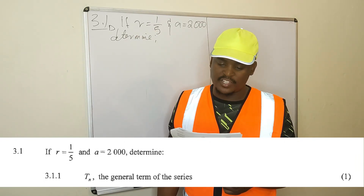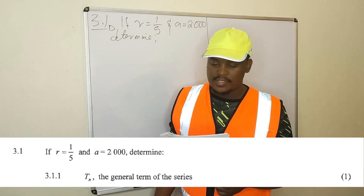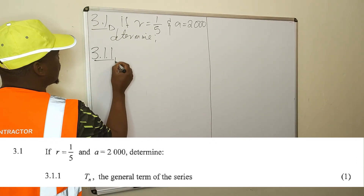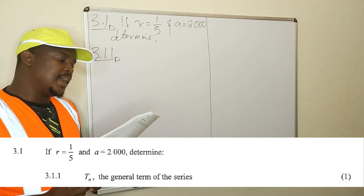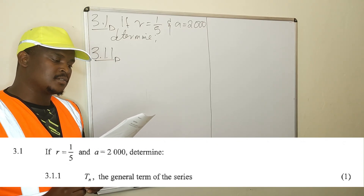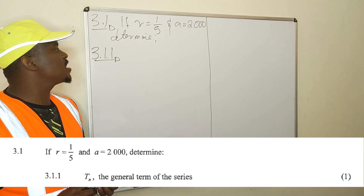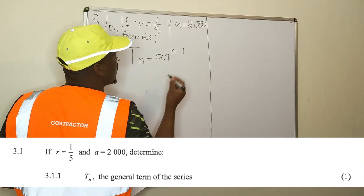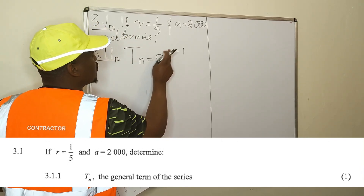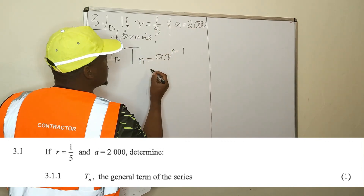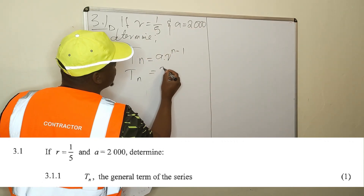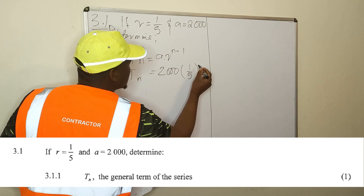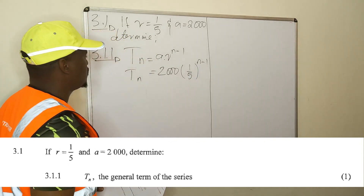The first term of the geometric series is 2000. For 3.1.1, determine the general term of the series. We know the general term is in the form Tₙ = a × r^(n−1), where a is the first term and r is the common ratio. So Tₙ = 2000 × (1/5)^(n−1). This is the general term of the series.